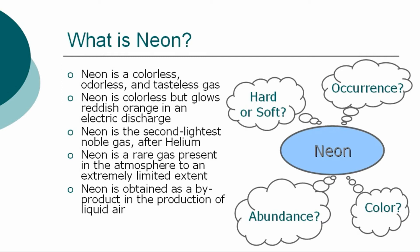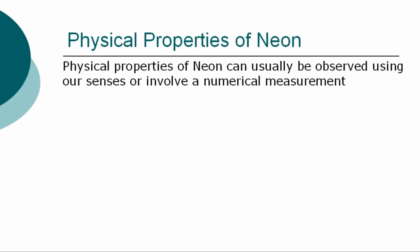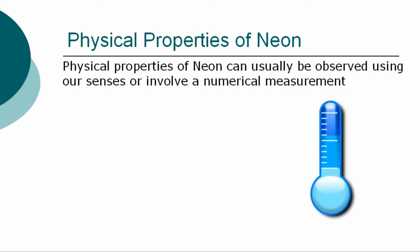Neon is the second lightest noble gas after helium. In terms of occurrence, neon is a rare gas, present in the atmosphere to an extremely limited extent. It is obtained as a byproduct in the production of liquid air. The more specific physical properties of neon can usually be observed using our senses or involve a numerical measurement, such as determining its boiling, freezing, and melting points.